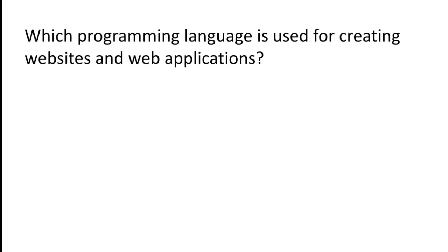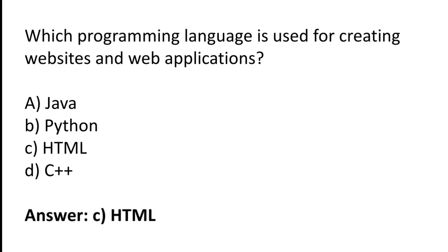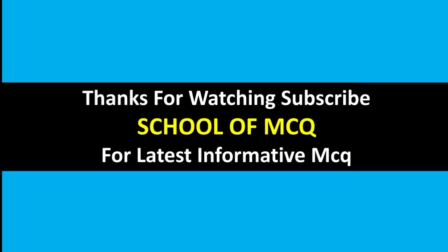Which programming language is used for creating websites and web applications? Java, Python, HTML, C++. The correct answer is option C — HTML is the programming language used for creating websites and web applications.